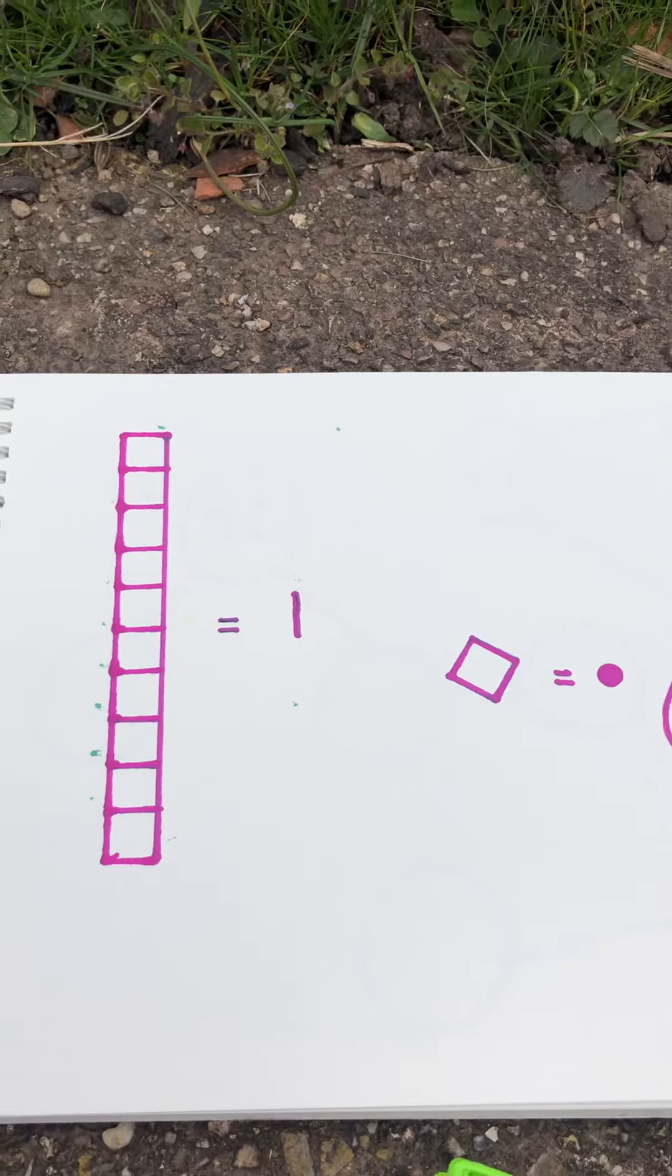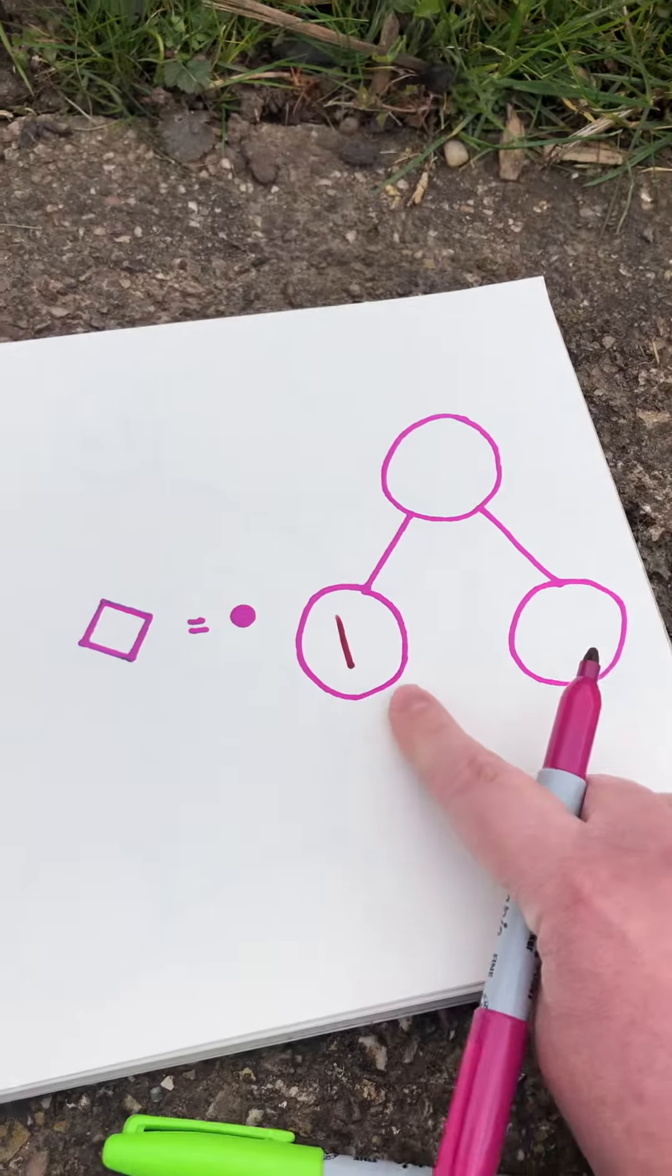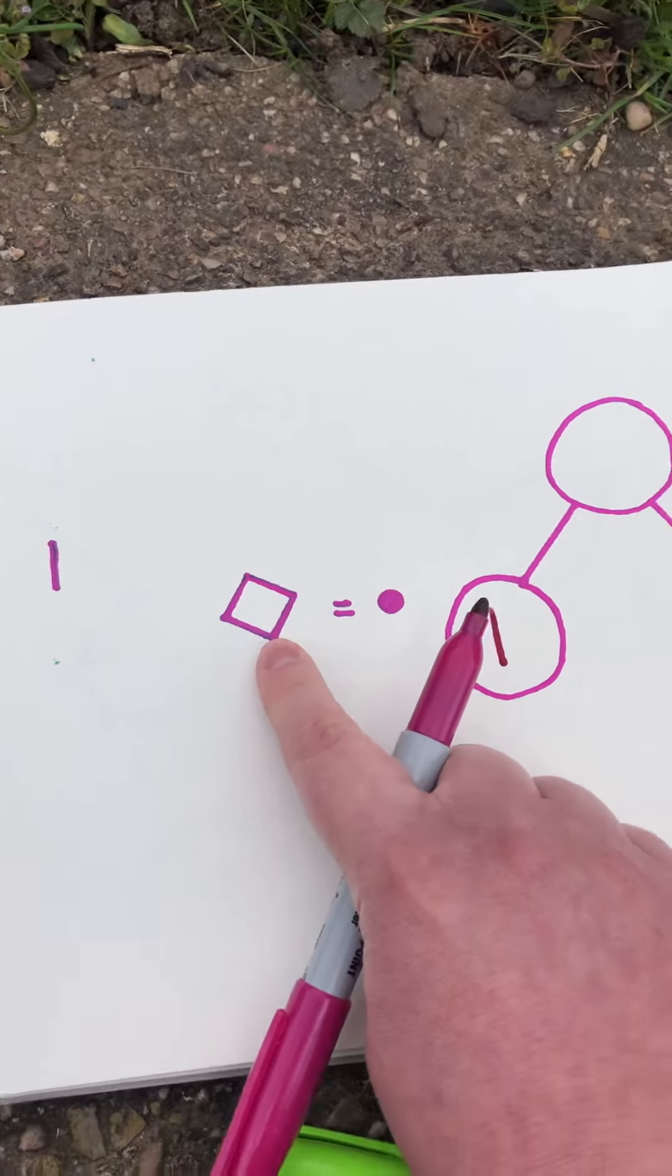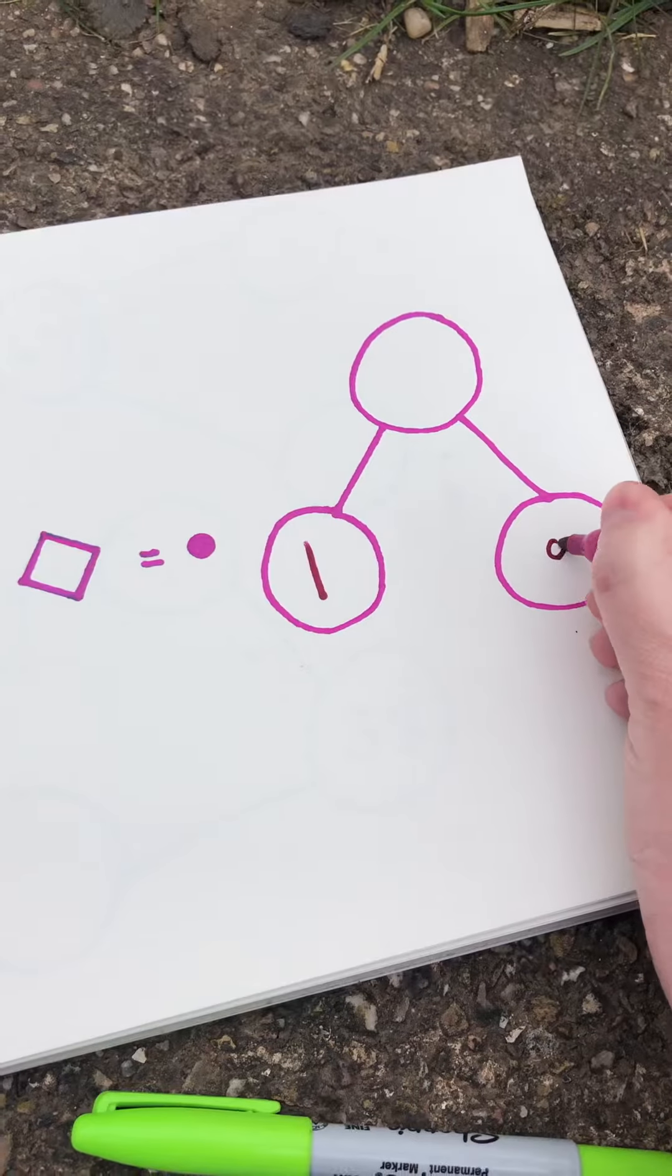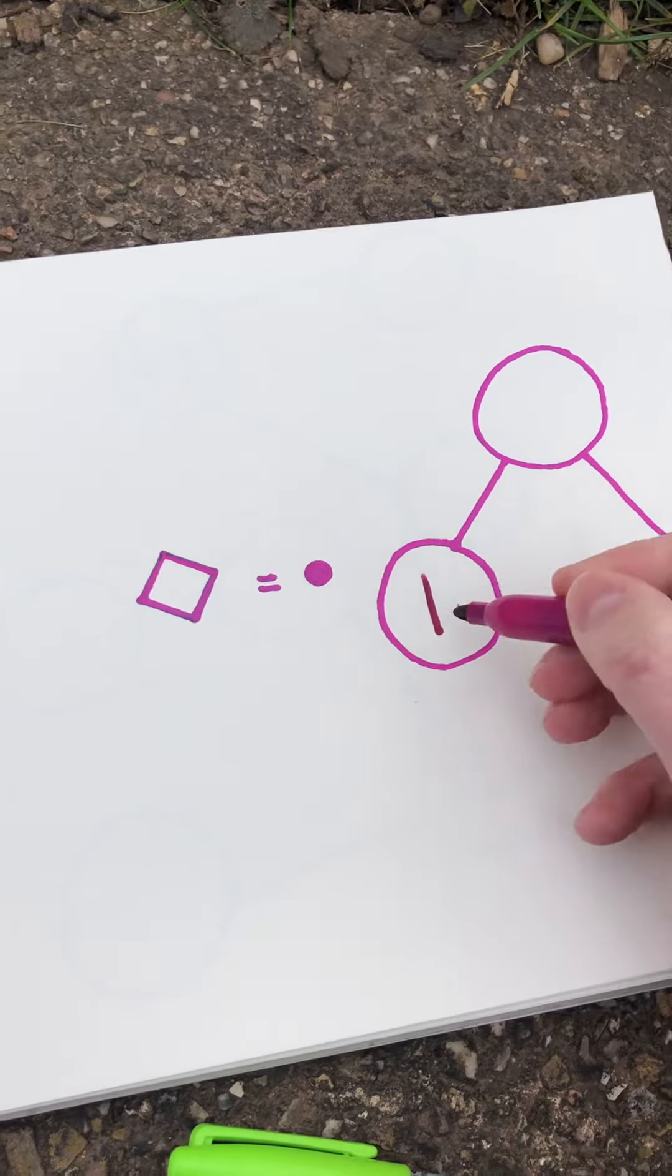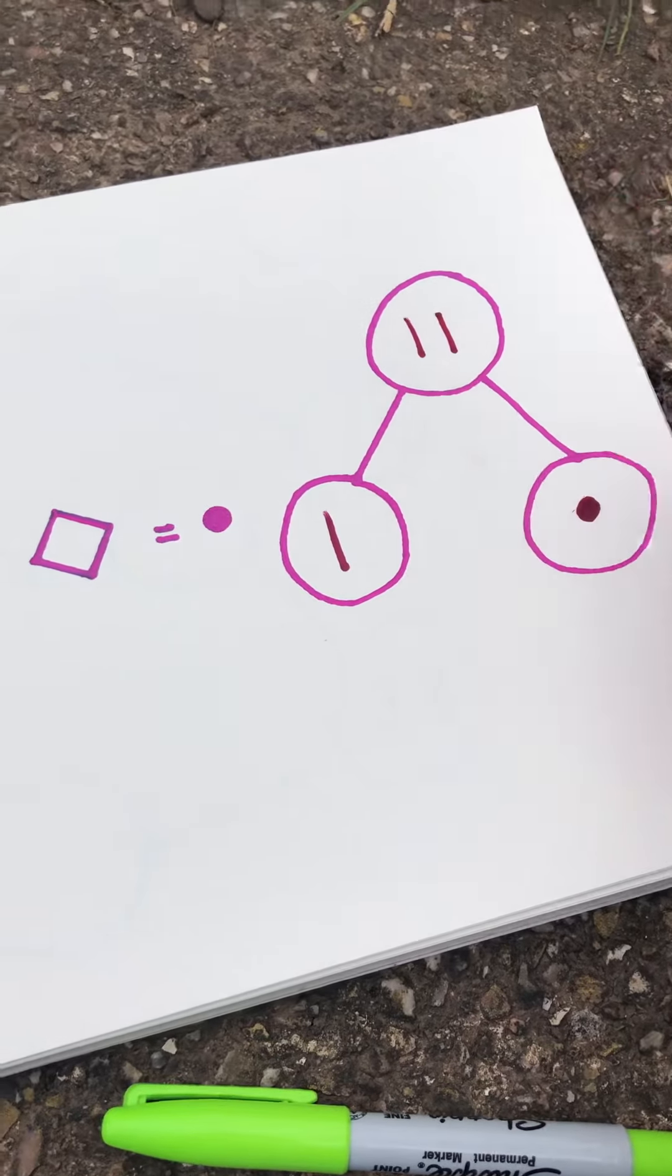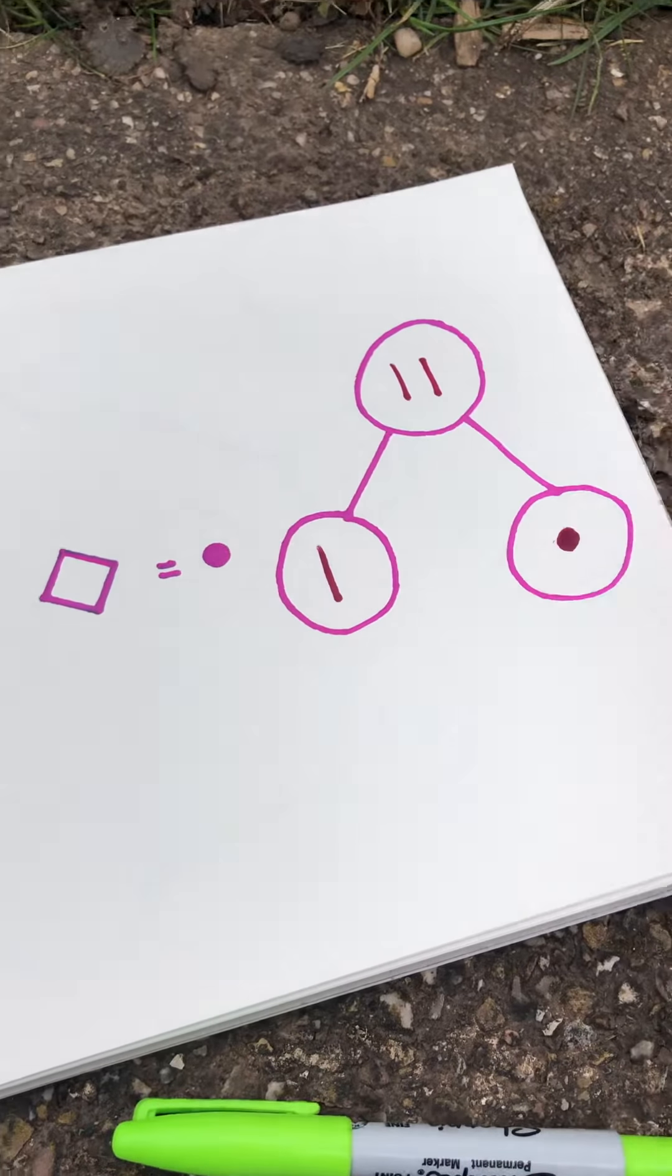So I can see straight away that this has 1 ten. So I'm going to put 1, and it has 1 one. So I'm going to draw the circle. So I know that there is 1 ten, and there is 1 one, and that makes the number 11.